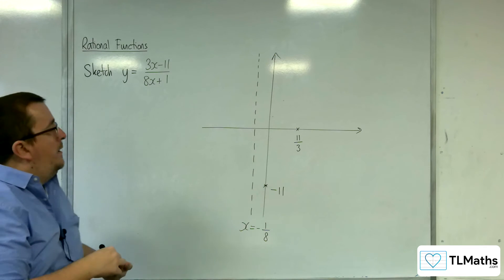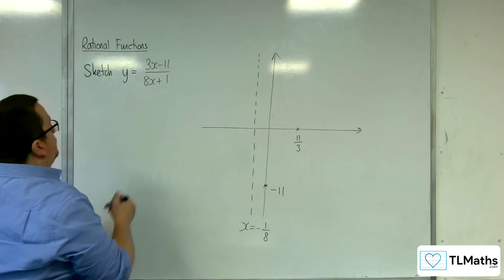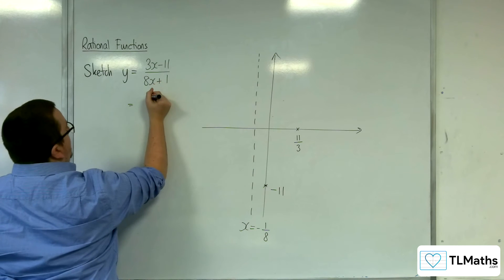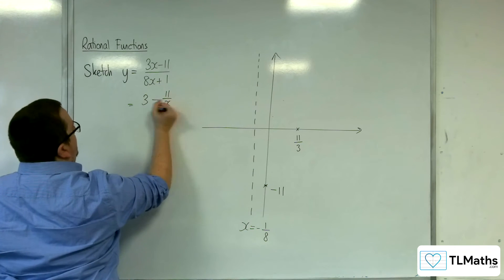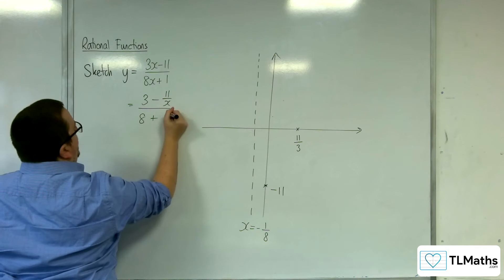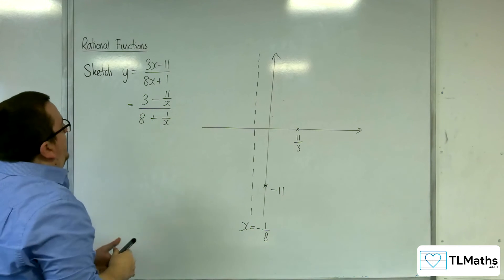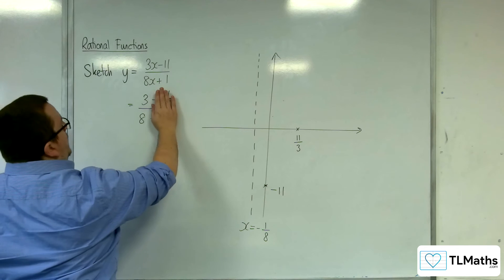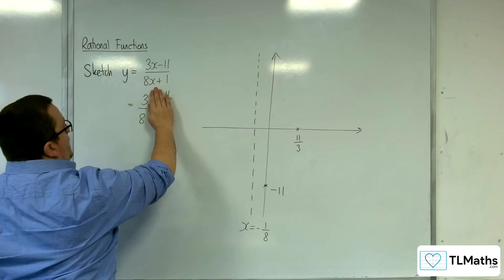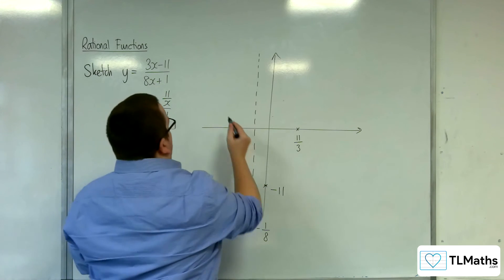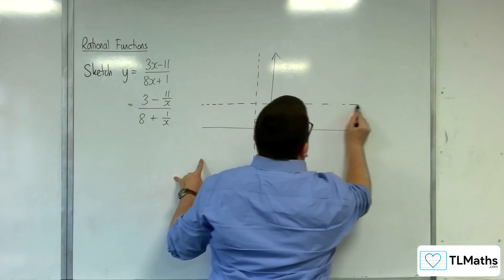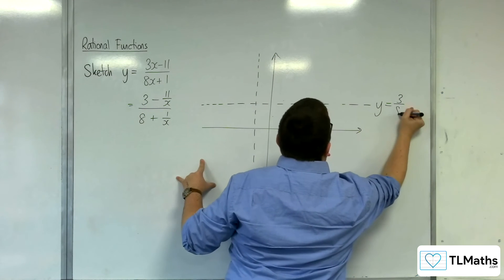And what about the horizontal asymptote? Well, divide top and bottom by x. We get 3 take away 11 over x over 8 plus 1 over x. So as x gets larger and larger in either direction, we're tending towards y equals 3 over 8. So horizontal asymptote y equals 3 over 8.